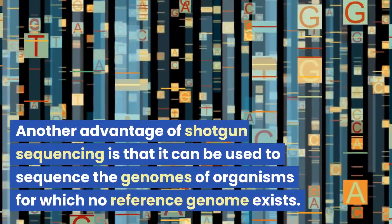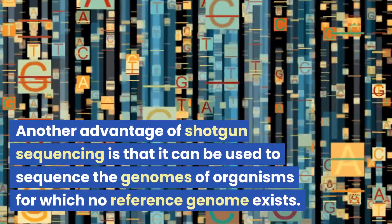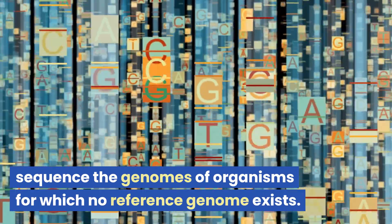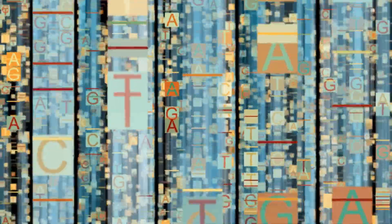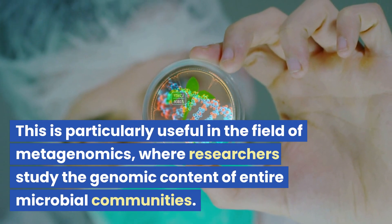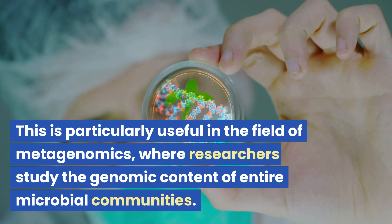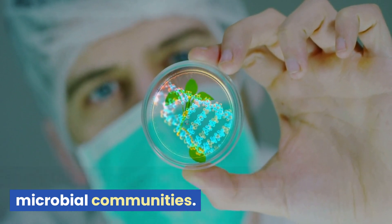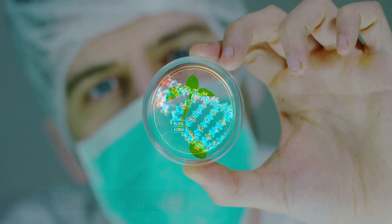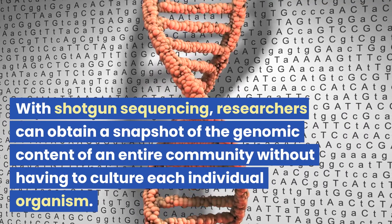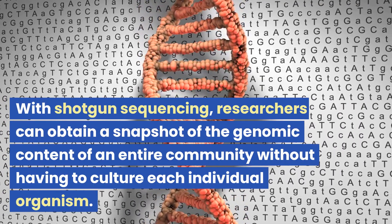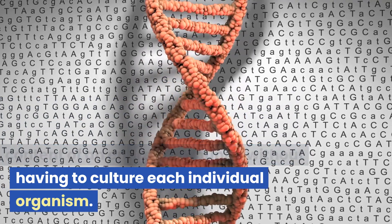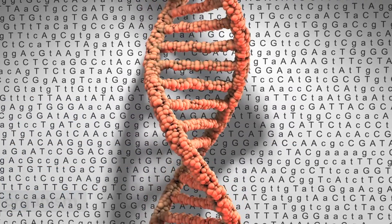Another advantage of shotgun sequencing is that it can be used to sequence the genomes of organisms for which no reference genome exists. This is particularly useful in the field of metagenomics, where researchers study the genomic content of entire microbial communities. With shotgun sequencing, researchers can obtain a snapshot of the genomic content of an entire community without having to culture each individual organism.